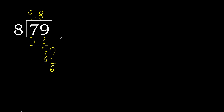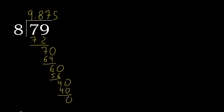Always complete with 0 — decimal point is here. 60: 8 multiplied by 8 is greater, so 8 multiplied by 7. Subtract. Complete: 40. 8 multiplied by 5 is 40. Subtract: 0. Therefore finished — 79 divided by 8 is complete here.